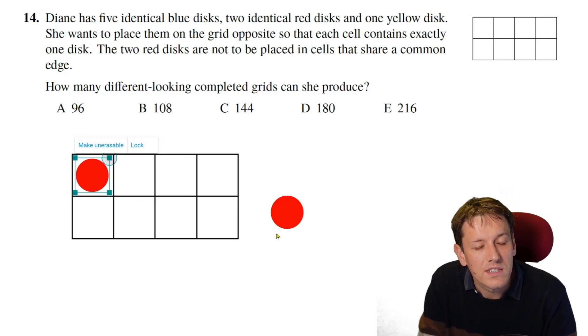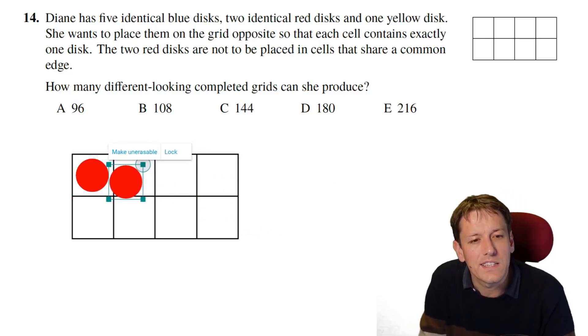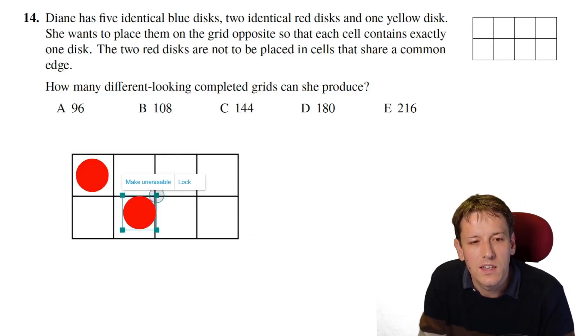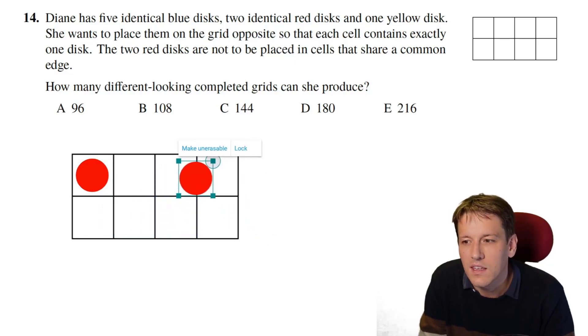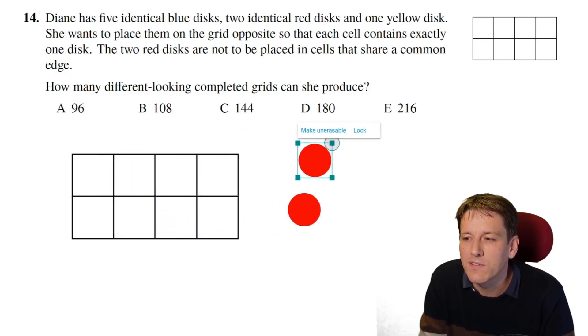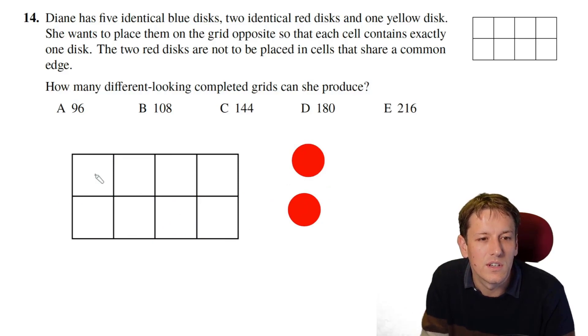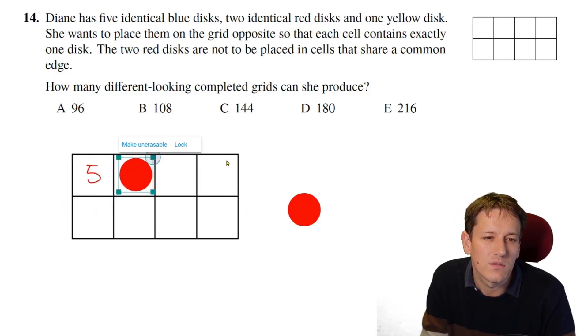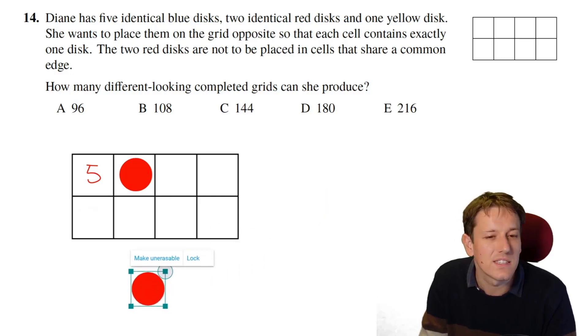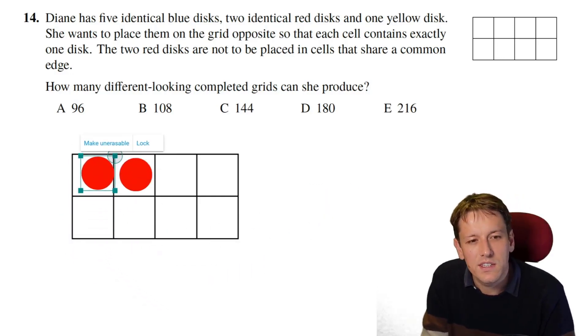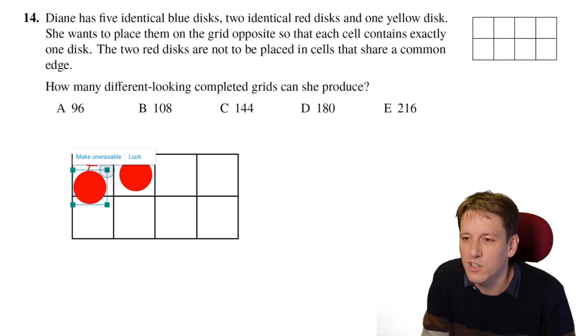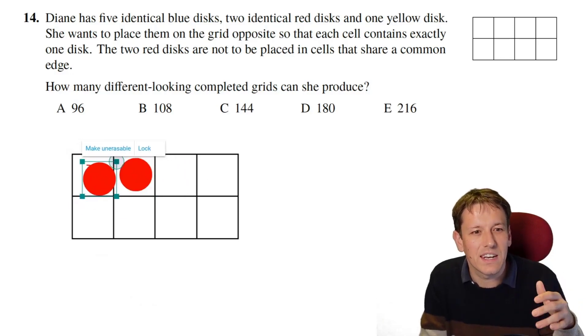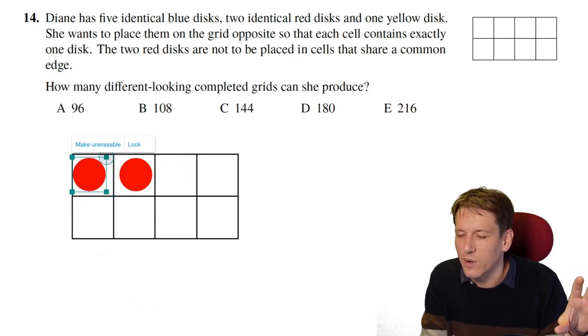So let's say I put a red disk here. How many other places could I put this other red disk? Well, I can't put it here or here, but I could put it here, here, here, here, or here. So there would be 5 possible ways of having a red disk in this corner. Now, what I do next is I think, okay, well, what if the first red disk was here? How many places are there that I can put this next one? Well, again, I'm not going to consider any that involve this square or any others that I've already considered.